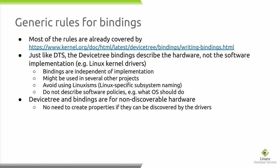What are the generic rules for bindings? They are already documented in the Linux kernel docs. First, bindings focus on the hardware — they should be independent of the implementation, ideally usable by other operating systems or projects, not only the Linux kernel. For this reason, we try to avoid Linuxisms: no Linux subsystem naming, no driver descriptions, no Linux-specific subsystem references. We also try to avoid describing operating system policy — we don't tell the OS what it should do, as that's not hardware description anymore. Bindings are for non-discoverable hardware; if your hardware can discover itself via an ID or capability register, you may not need bindings at all.